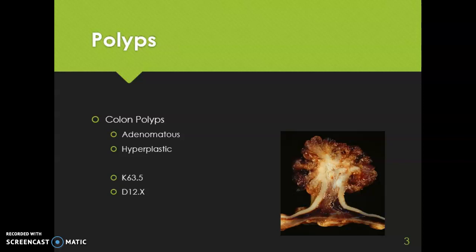We code K63.5 for a polyp that is not documented as adenomatous or hyperplastic, even if the site of the polyp is known. If the documentation states the polyp is adenomatous, we assign a code from D12, and this code is based on the anatomical location or site of that polyp. We also want to code a patient's personal history of a polyp if it is relevant to their care, and we code personal history of a polyp by site.